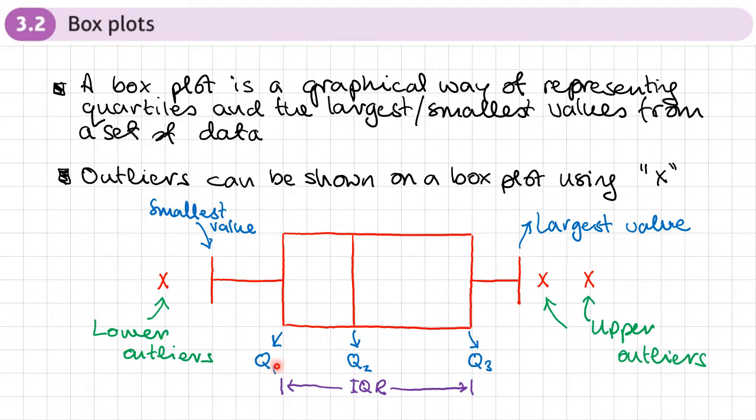If we've got any outliers that are below, they would be represented as an X on this side, which means that this bar stops at the value above the outlier. Here you can see we've got two upper outliers represented on this box plot. So the top bar here, this largest value, won't be the largest value that's in our data set, but the third largest value.